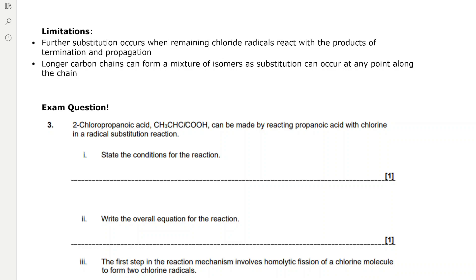Longer carbon chains can form a mixture of isomers as substitution can occur at any point along the chain. For example, with butane we can have substitution at position one or two, and this problem becomes worse as the chain length increases.